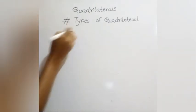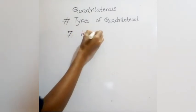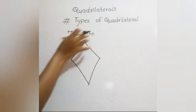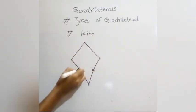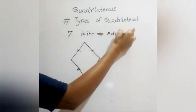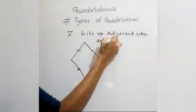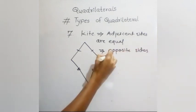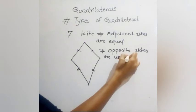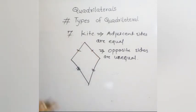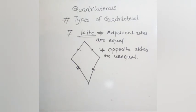The seventh type of quadrilateral is a kite. A kite has adjacent sides that are equal, but opposite sides are unequal. So if the adjacent sides are equal and the opposite sides are unequal, that quadrilateral is a kite. In total, there are seven types of quadrilaterals.